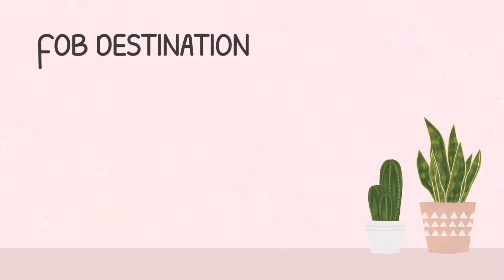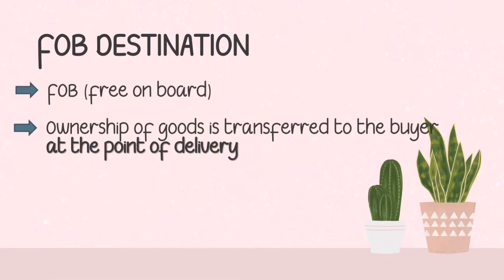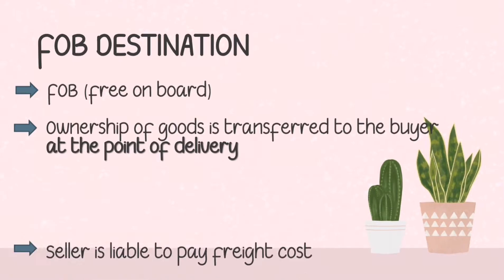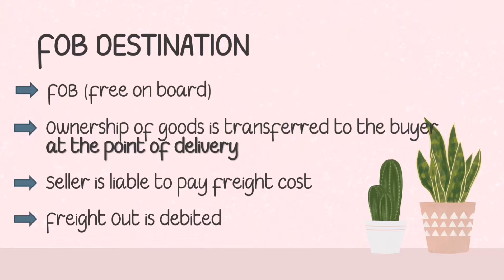Next is FOB destination. In this case, ownership of goods is transferred to the buyer at the point of delivery, meaning risk and rewards are transferred to the buyer once the goods are actually delivered and received by the buyer. Under FOB destination, the seller is still liable to pay for the freight cost. The freight out is debited on the part of the seller, and this freight cost is considered a delivery expense.